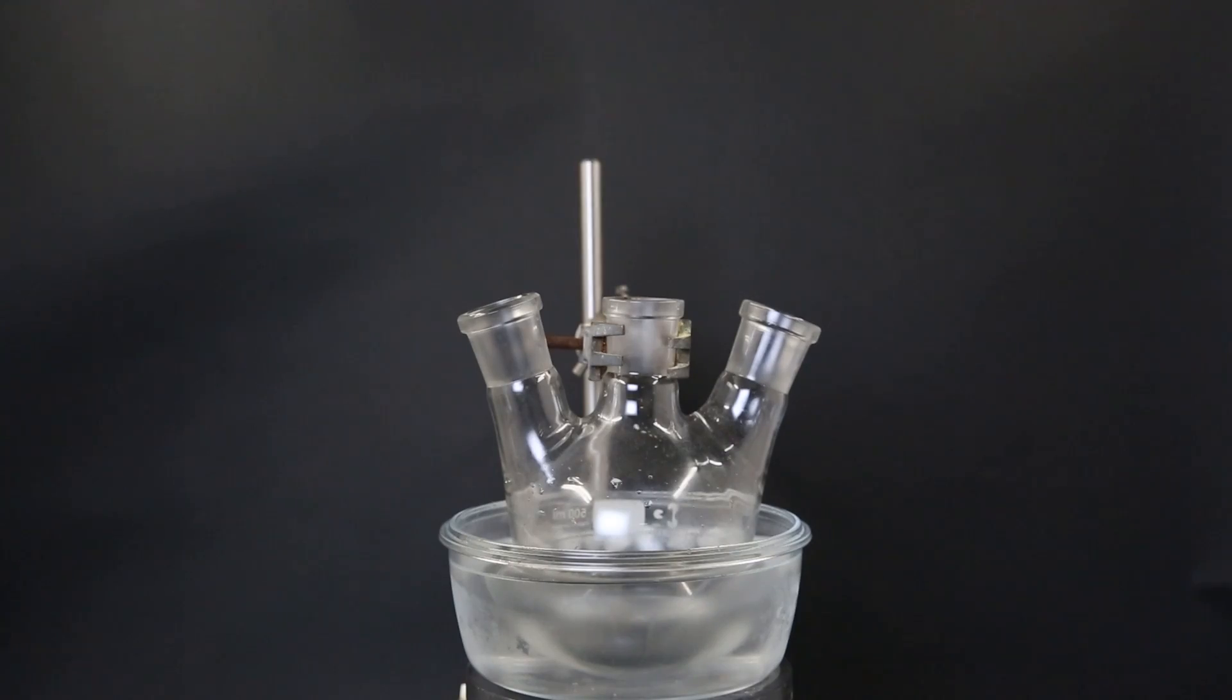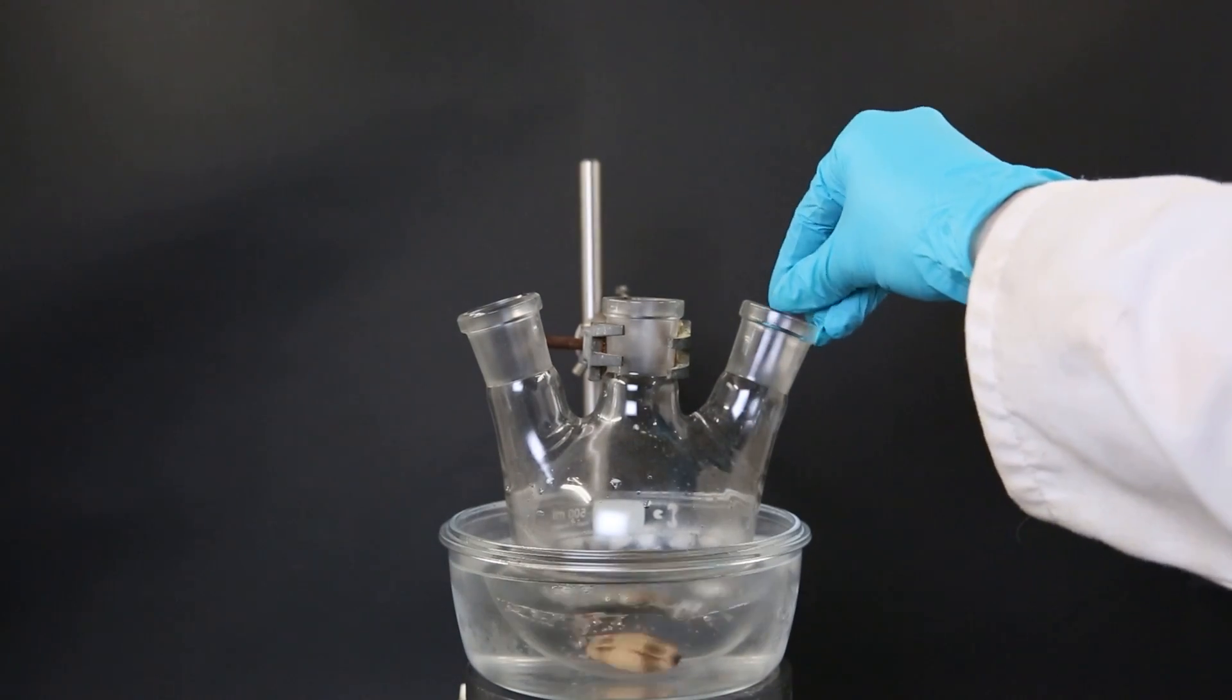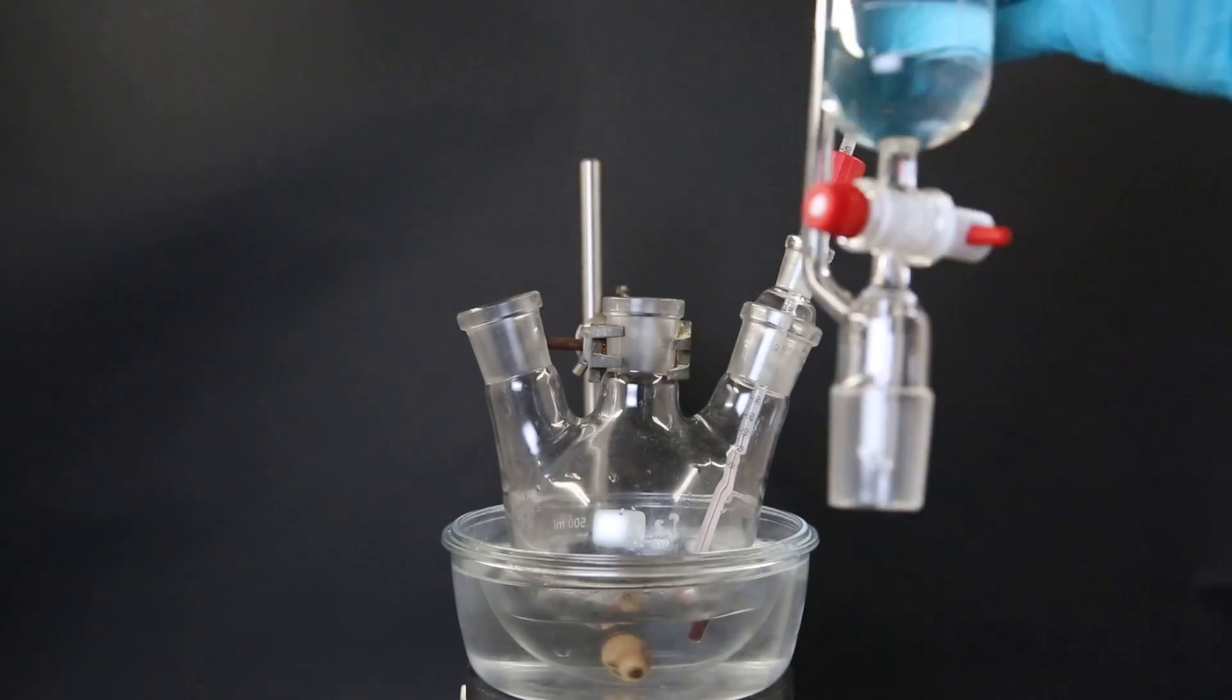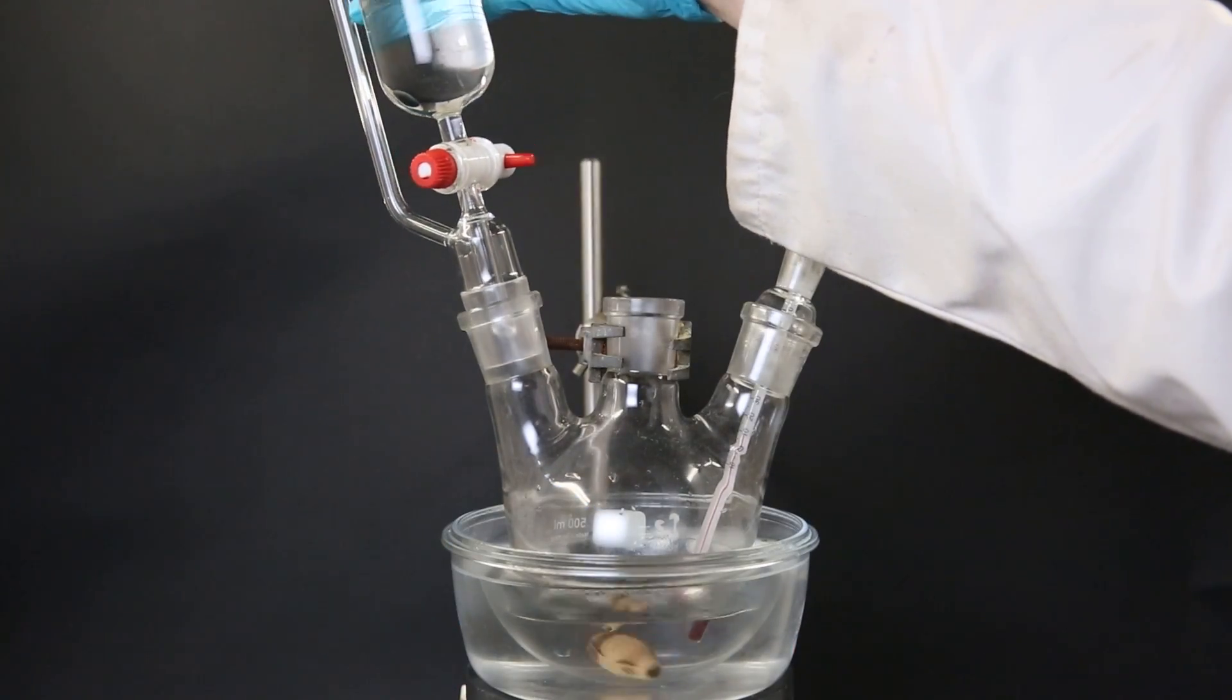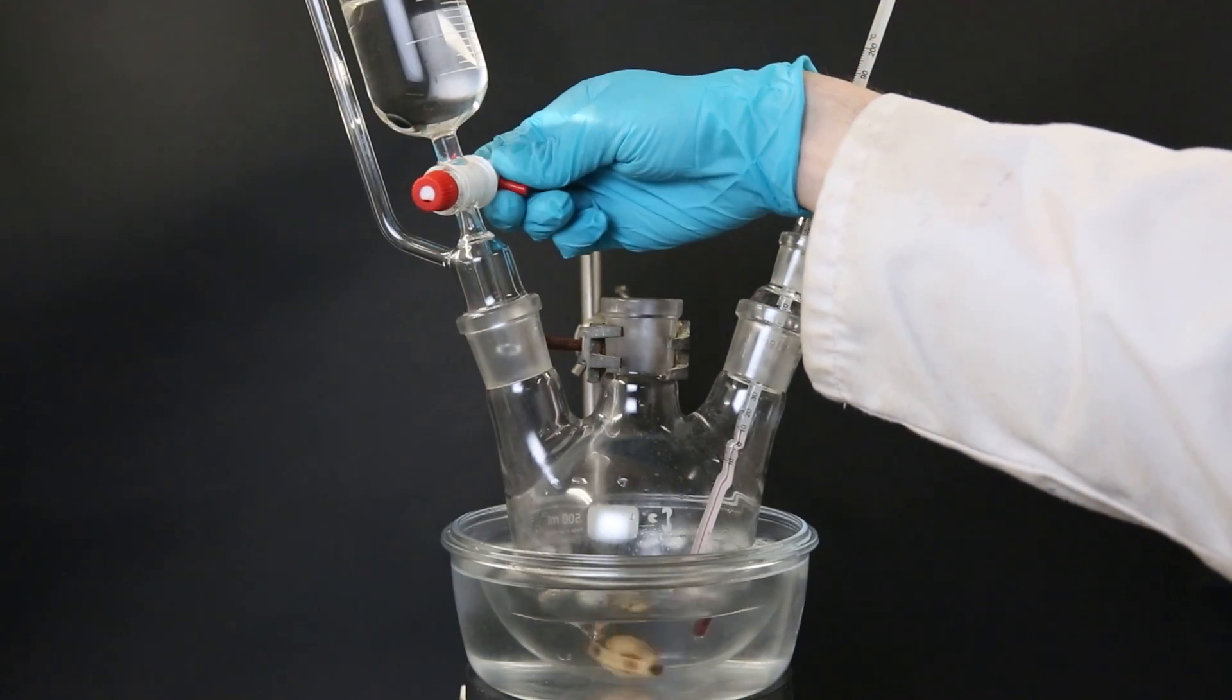So first, I set up a three-neck flask in an ice bath and I add 90 ml of ethanol. I drop in a stir bar, add a thermometer, and wait for the ethanol to cool down. Then I attach an addition funnel that contains 80 ml of concentrated sulfuric acid and add it dropwise to the ethanol.